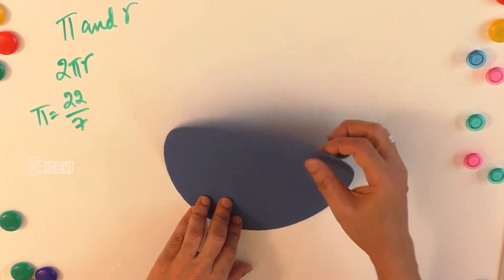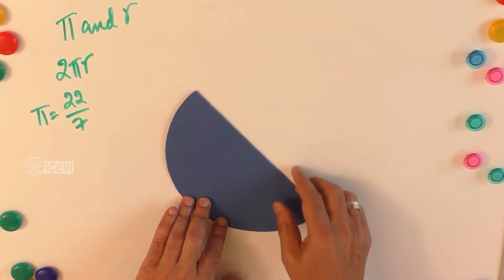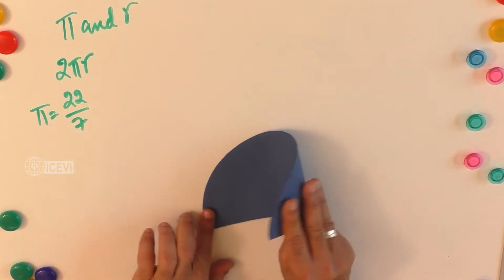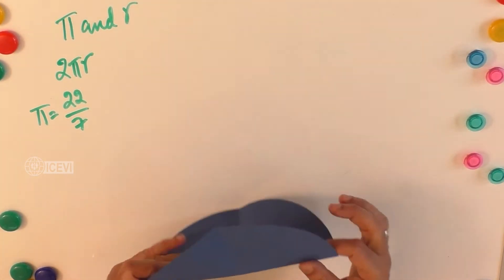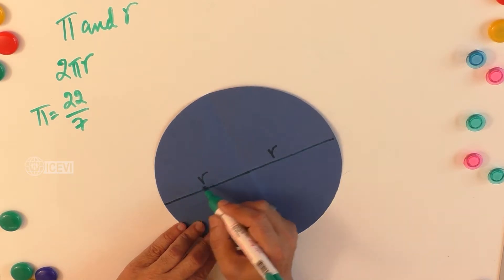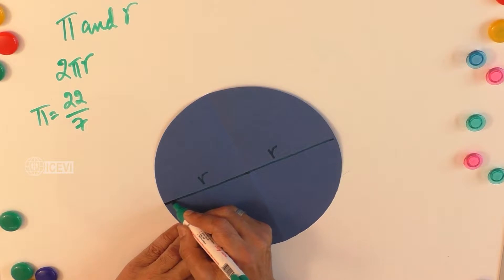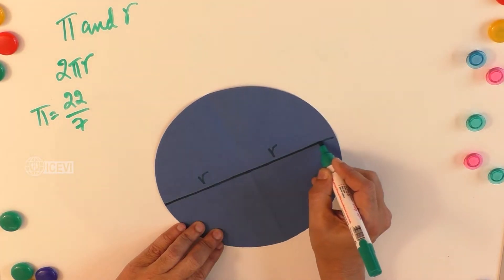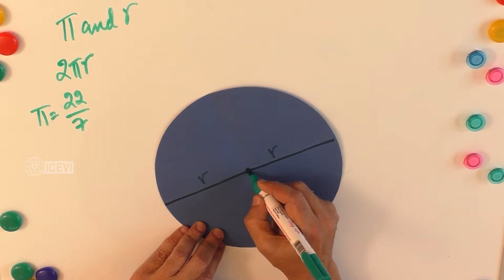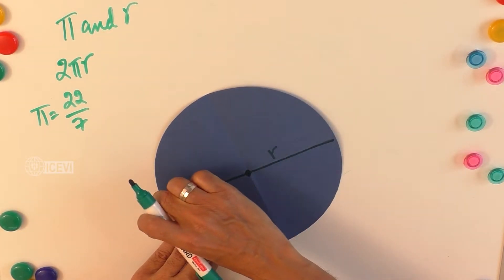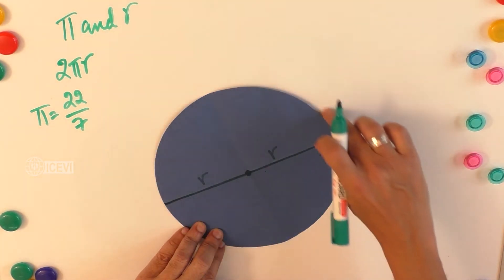Now let us take a circle and fold it to get the diameter. Then we fold it again vertically to get the radius. What is the relationship between the diameter and the radius? The diameter of a circle is two times the radius.